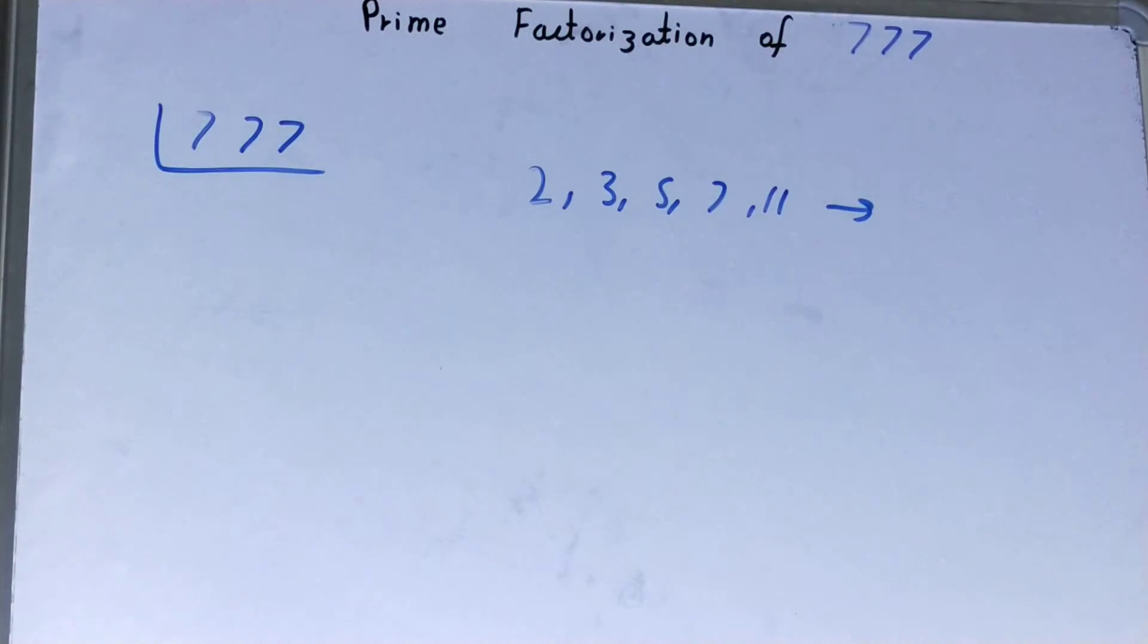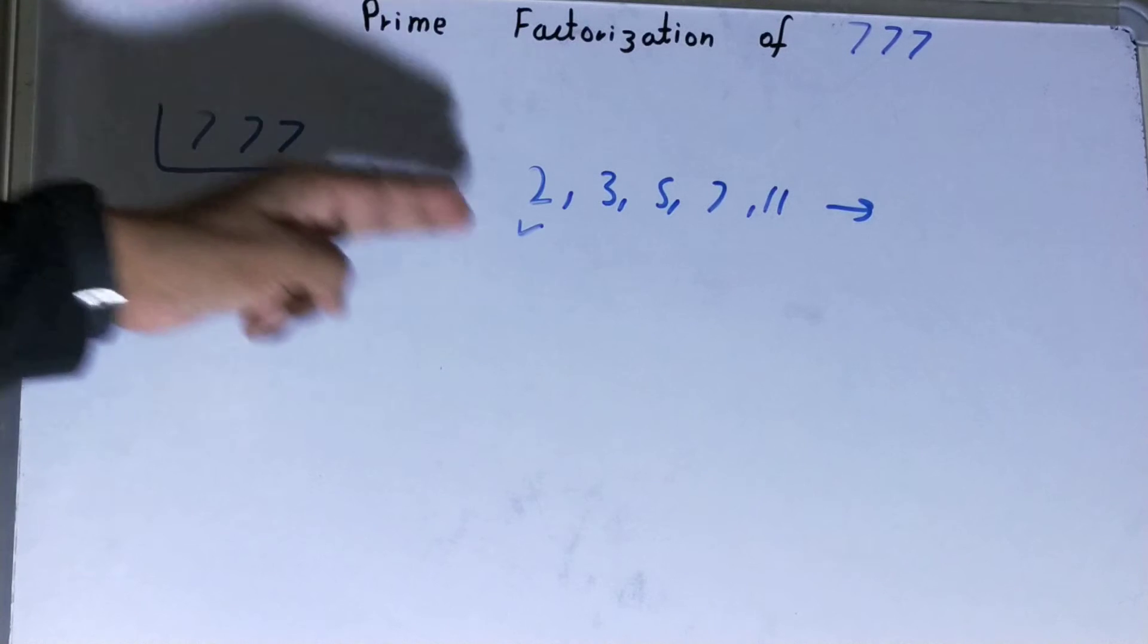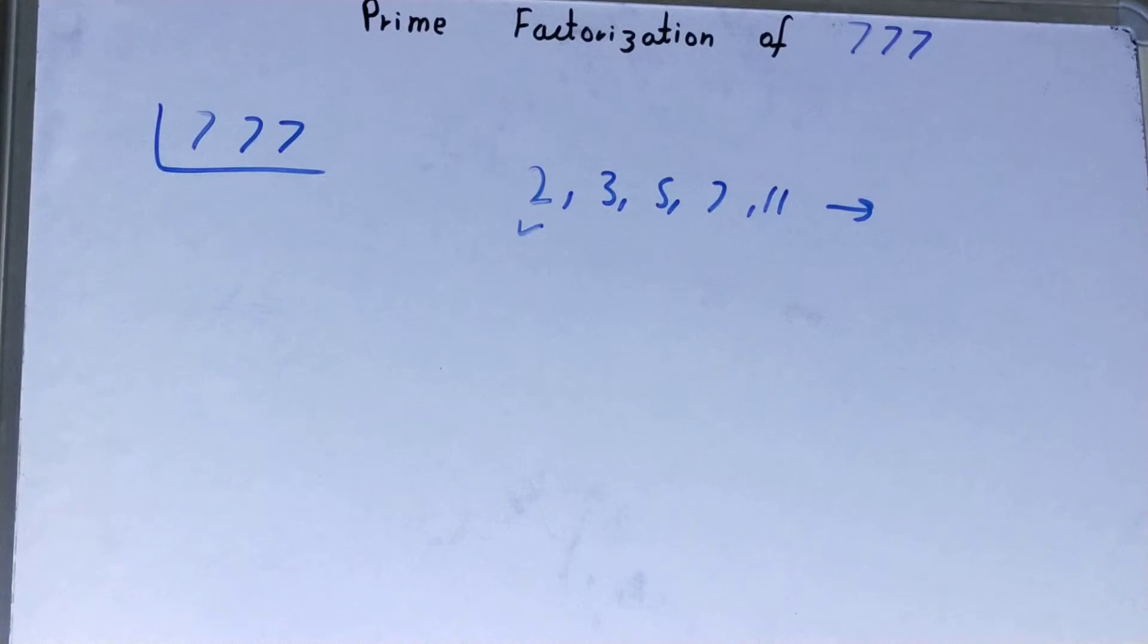You need these prime numbers for finding out prime factors of numbers. What we do is start from the lowest prime number, which is 2. Is this number divisible by 2? We can clearly say it is not because 777 is an odd number.